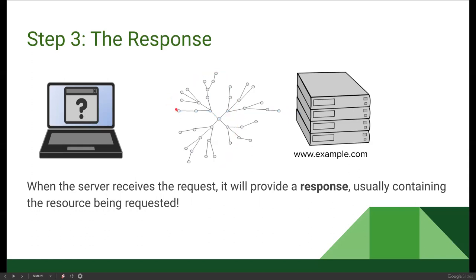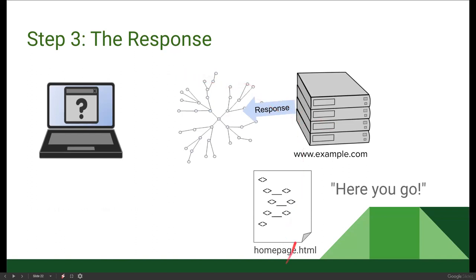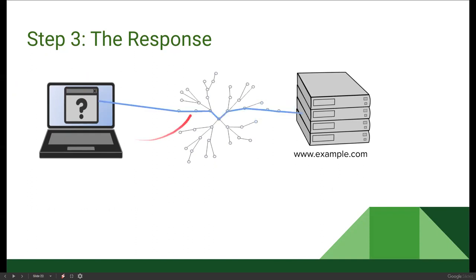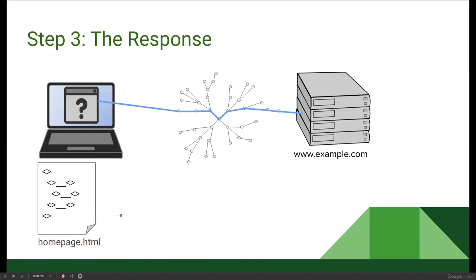At that point, step three: the response. The server receives the request and provides a response, which usually contains the resource being requested. So example.com gets our request for homepage.html and sends it back. Since our request included the IP address — the internet address for our computer — the server's response knows exactly where to go, sending it back through the internet until it gets to our computer.